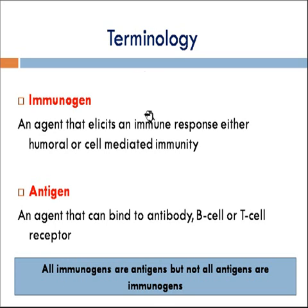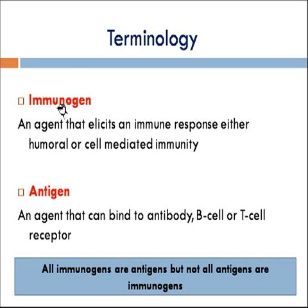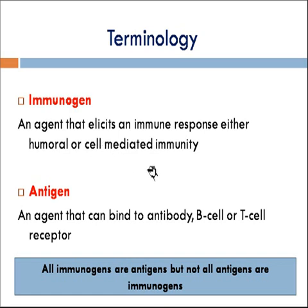There are certain terminologies which you all must be aware of. The first is immunogen. As it is clear from the name itself, it is a combination of two words: immuno and gen. It is any agent that elicits and/or generates an immune response. This immune response can be either humoral or cell-mediated immunity. Humoral is basically antibody-mediated immunity, and cell-mediated immunity involves specific lymphocytes like T cells and B cells.